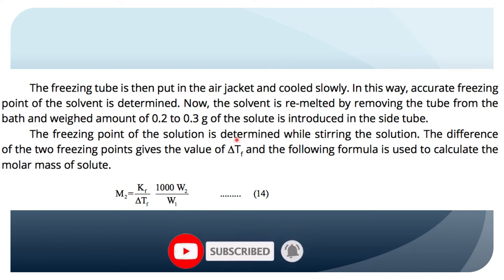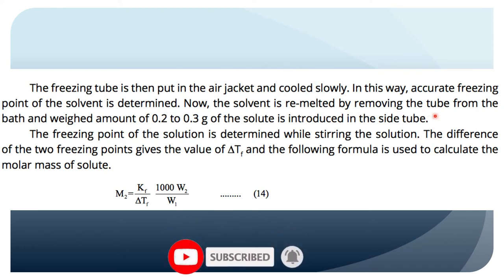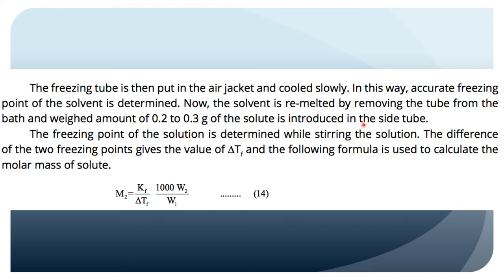The solvent is then remelted by removing the tube from the bath. A weighed amount of 0.2 to 0.3 grams of solute is introduced through the side arm into the freezing tube. We melt the solvent because it will have frozen, and then add 0.2 to 0.3 grams of solute to form the solution.